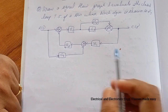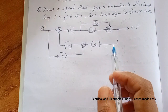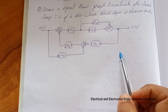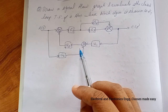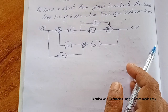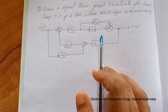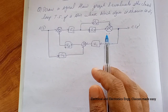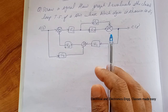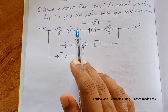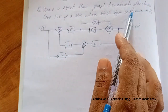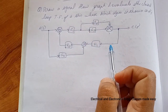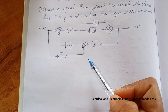Hello everyone, welcome to the new class. Today's class covers problems based on the conversion of block diagrams to signal flow graphs. I have discussed several problems related to this previously, so if you haven't watched those please go through them. Let us go through the problem: draw a signal flow graph and evaluate the closed-loop transfer function of the system whose block diagram is shown in the figure.